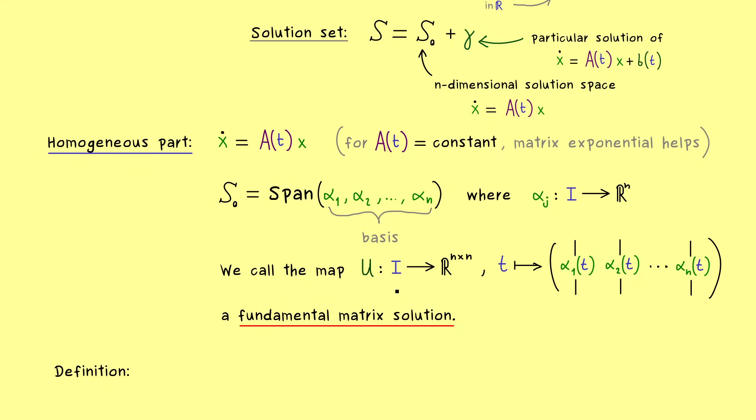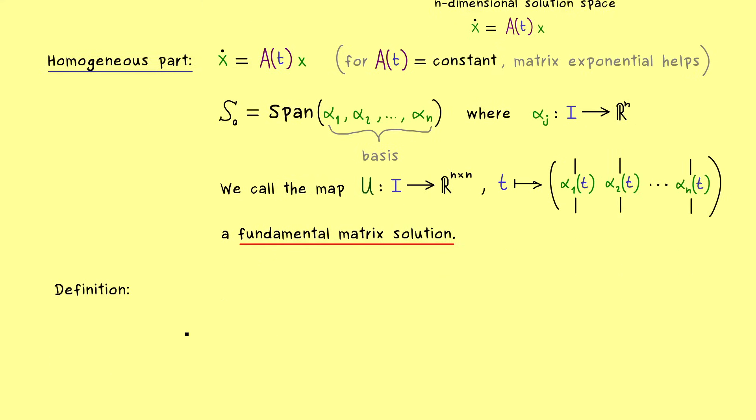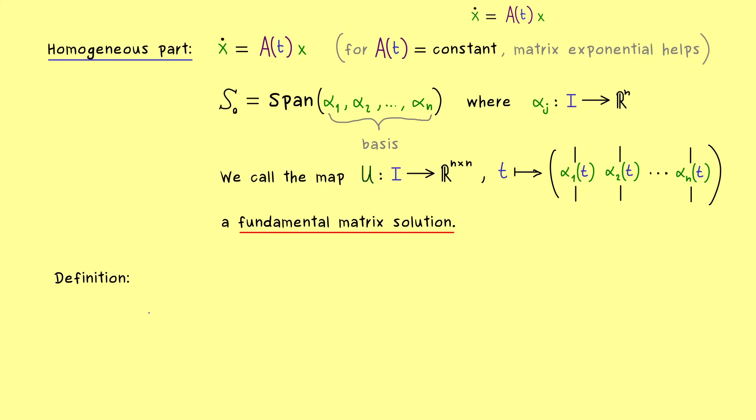Most importantly, for each t what we have here is a square matrix, which means we can calculate the determinant of it. And exactly this leads us to the definition of the Wronskian determinant. We assume the same thing as before, which means we have this linear system...